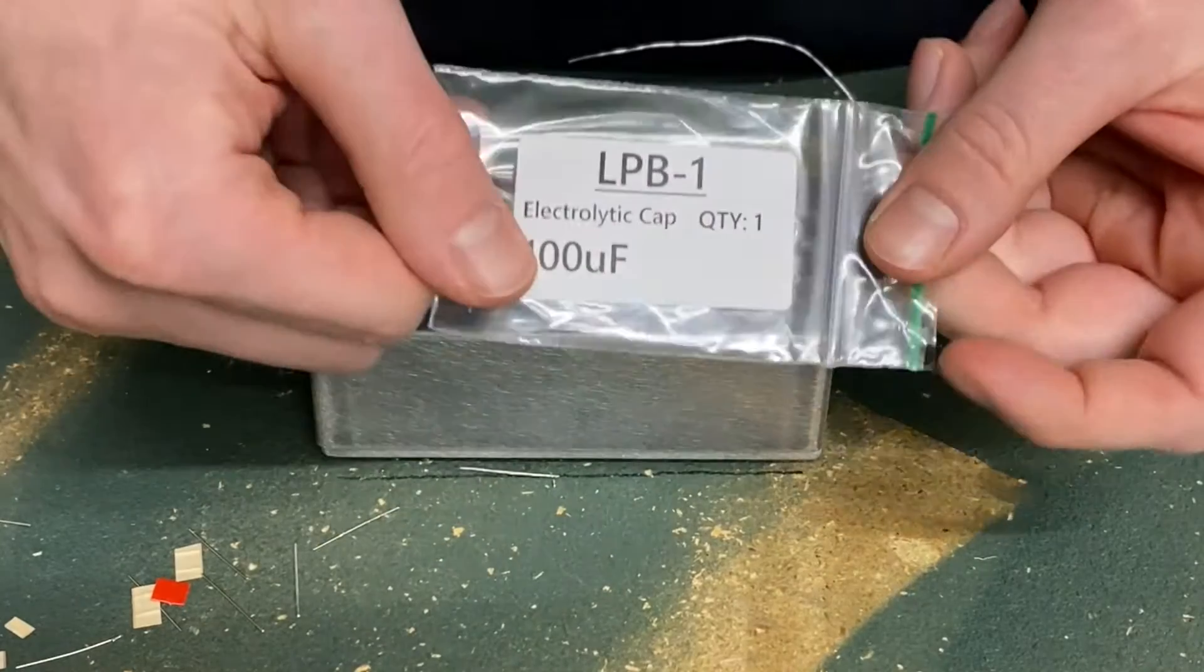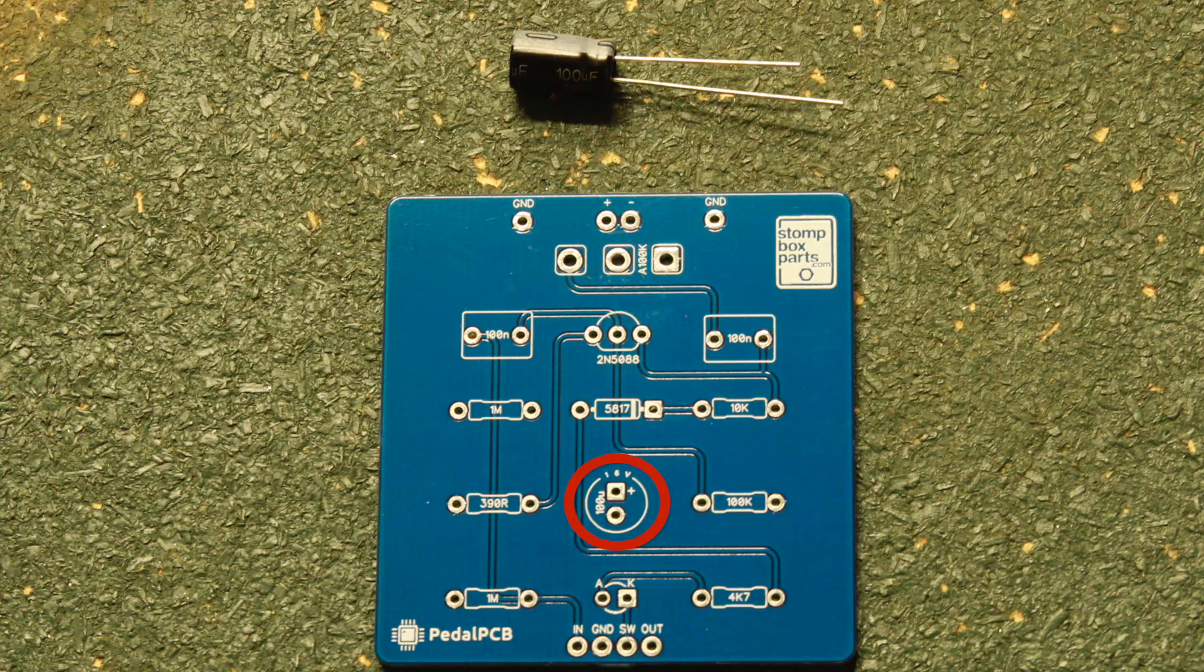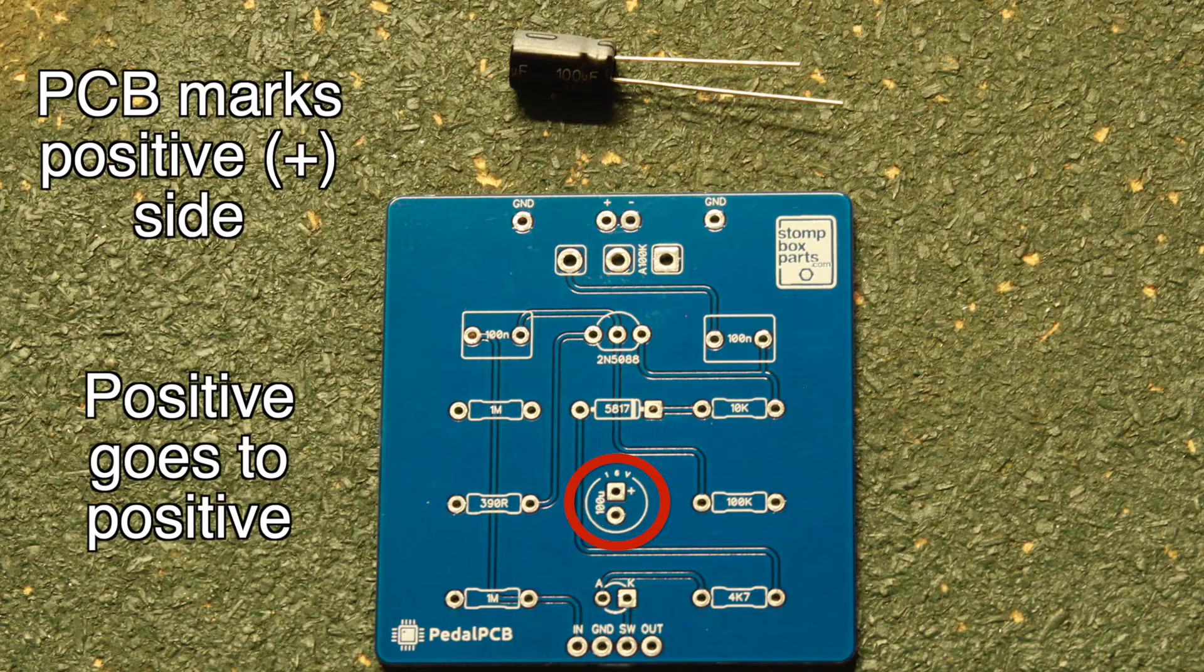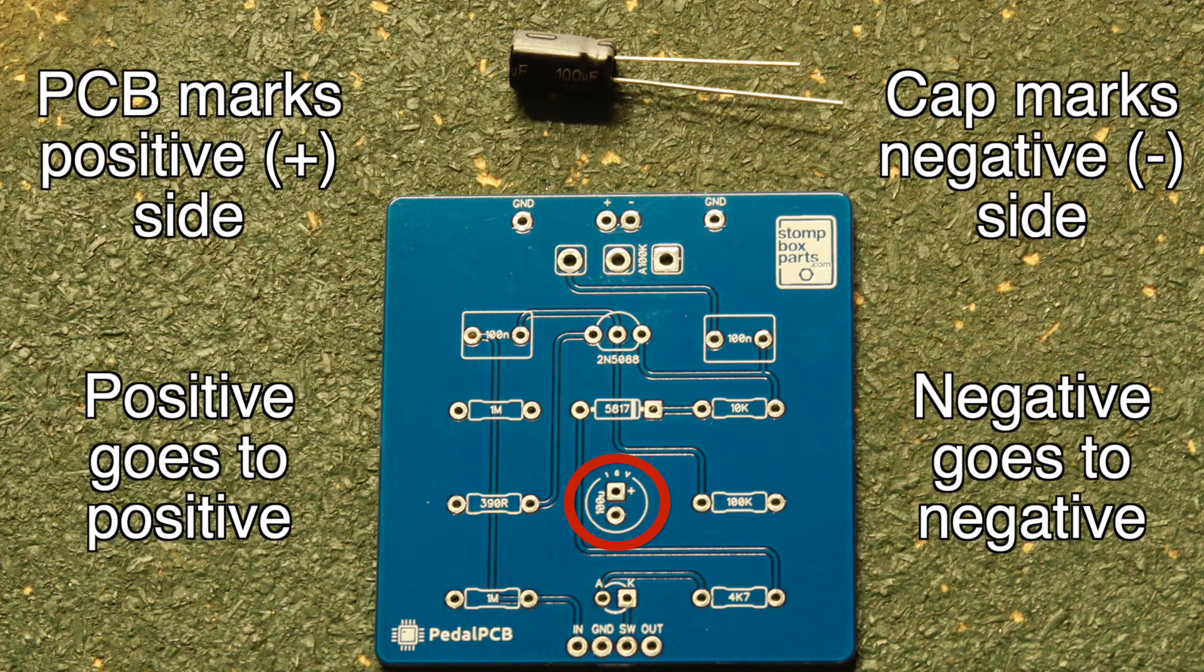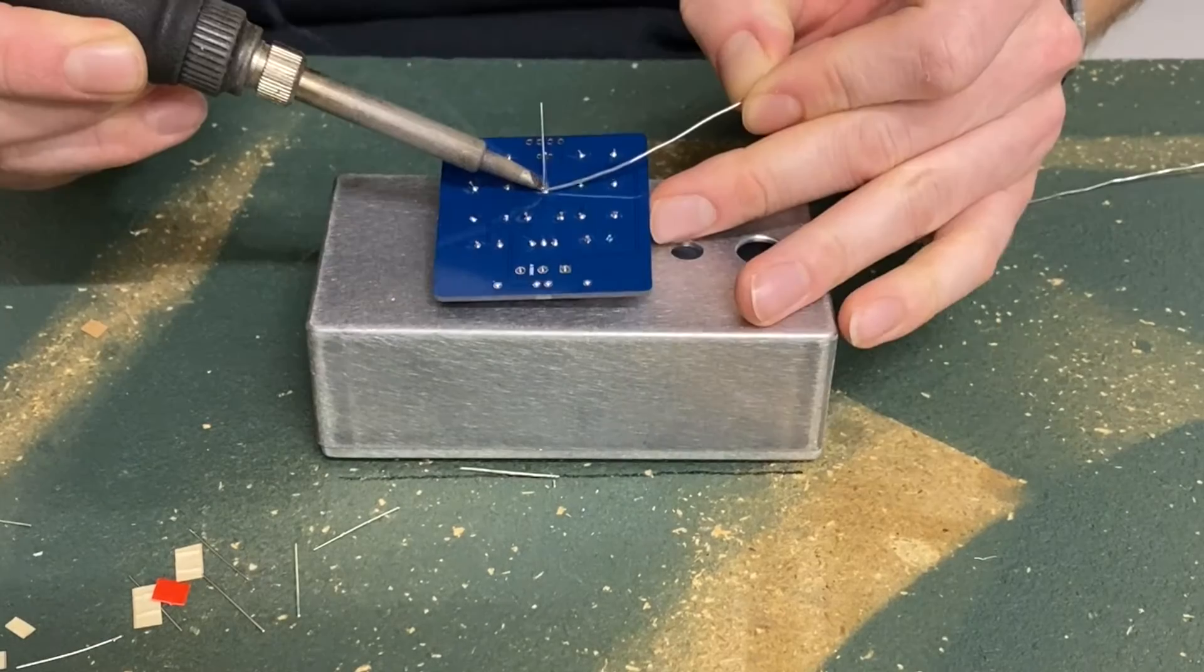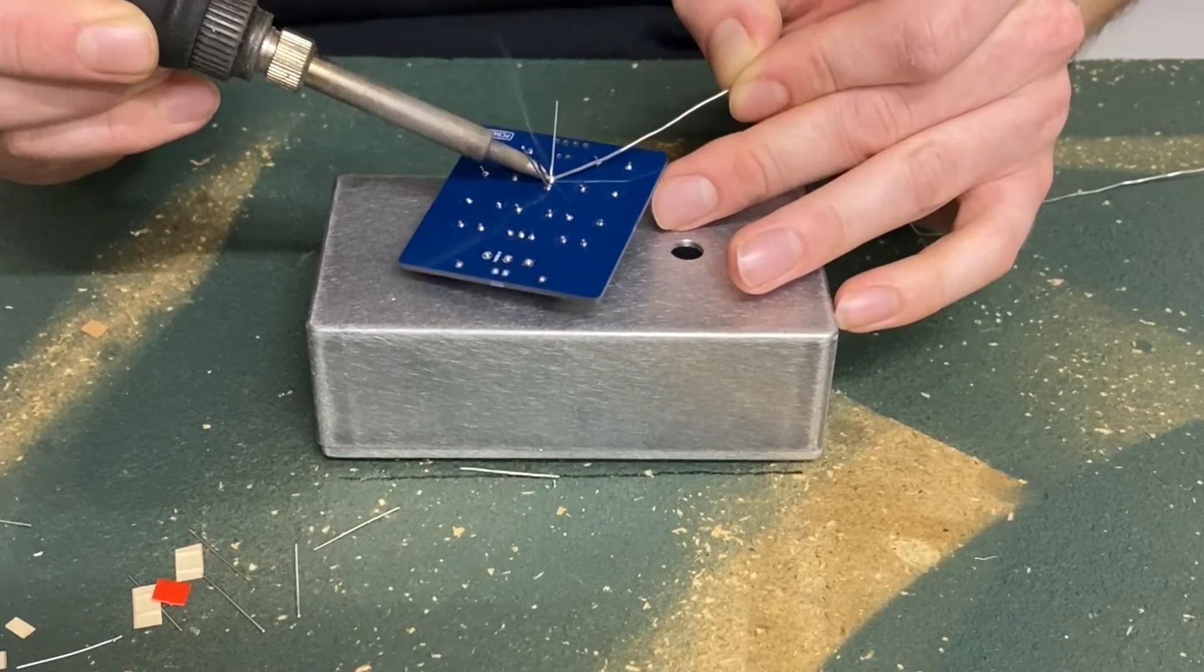Now grab the 100U electrolytic capacitor. This part also has polarity. The PCB marks the plus side and the capacitor marks the negative side. Plus goes to plus and minus goes to minus. Double check polarity and solder it in.